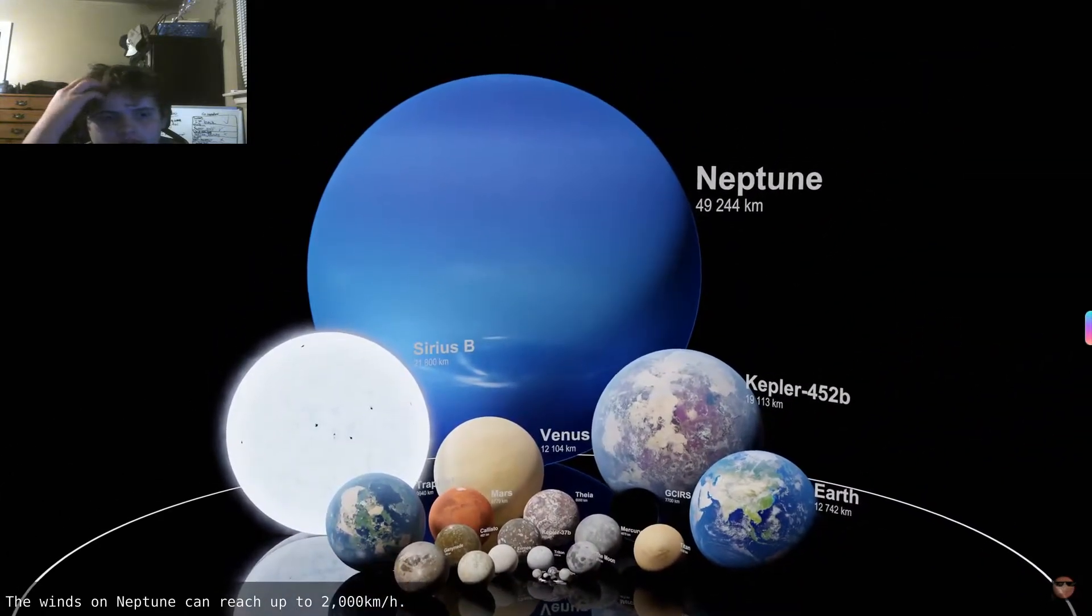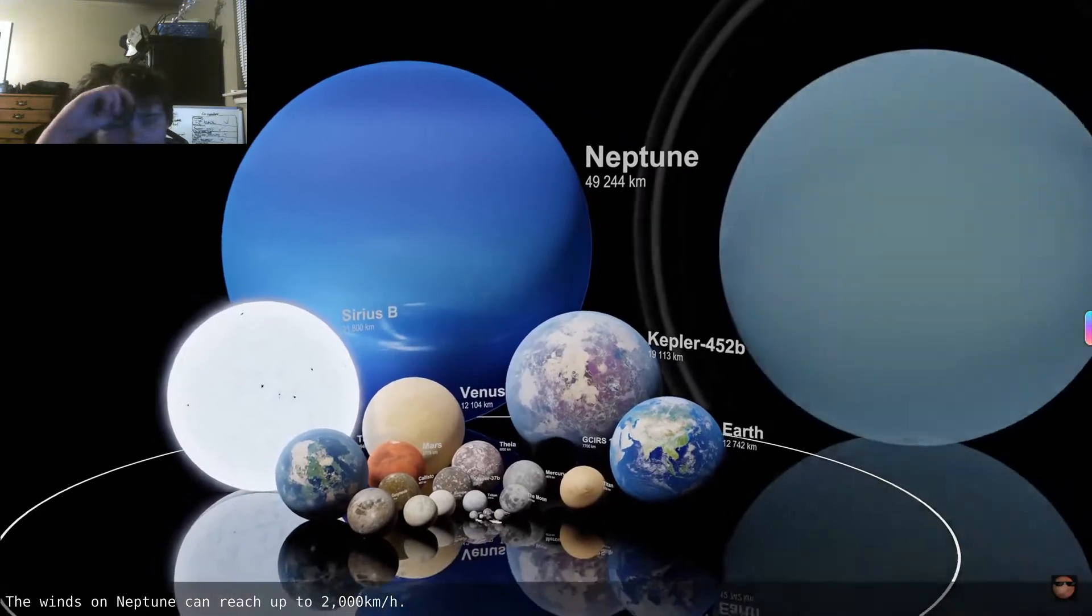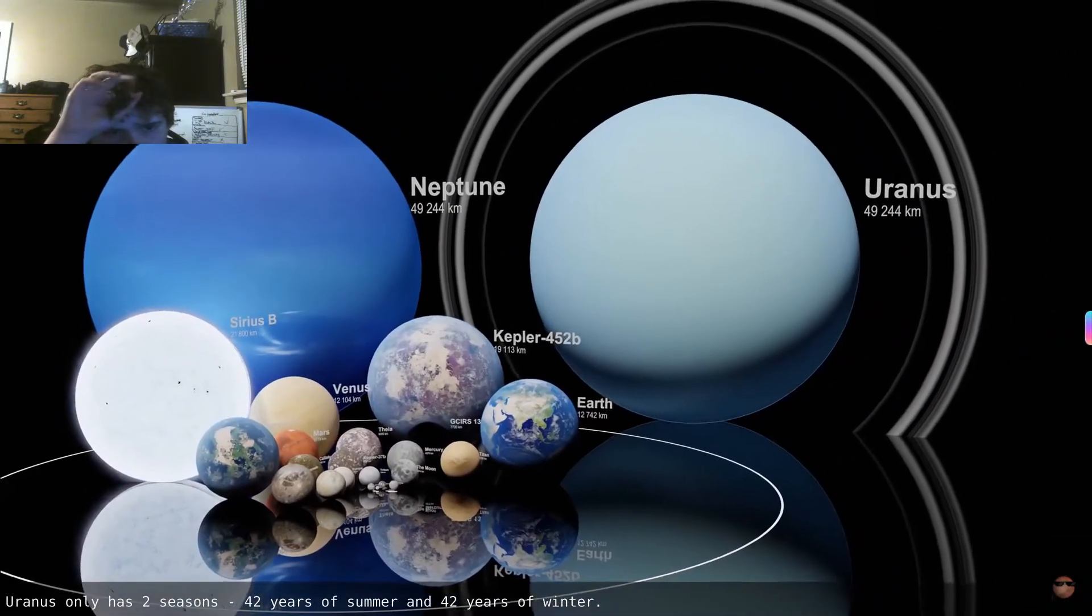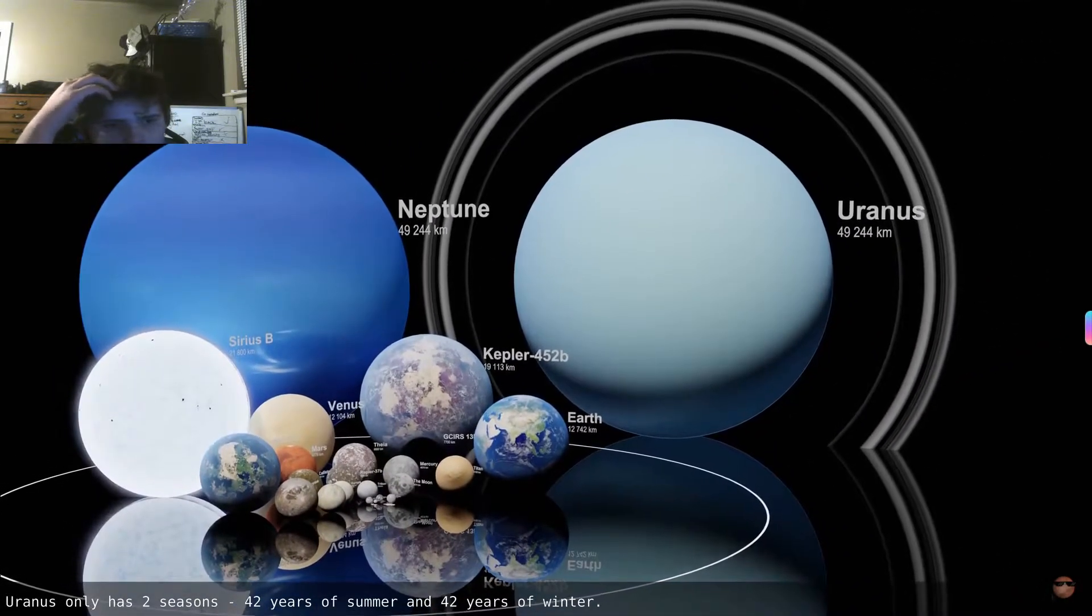Neptune. Dang, the wind's gonna go up that high? Rain is only, has two seasons.